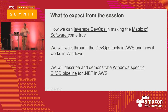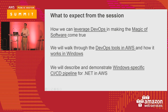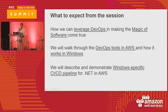The expectation from the session: how we can leverage DevOps in making the magic of software come true. We'll also walk through some DevOps tools in AWS. We'll focus on Windows and how these tools work with Windows. Then we'll go deeper into the specifics of a CI/CD pipeline on Windows using .NET on AWS. For questions, because of the time, if we can hold questions to the end, then we can answer, or I can do it outside, whichever makes it comfortable.